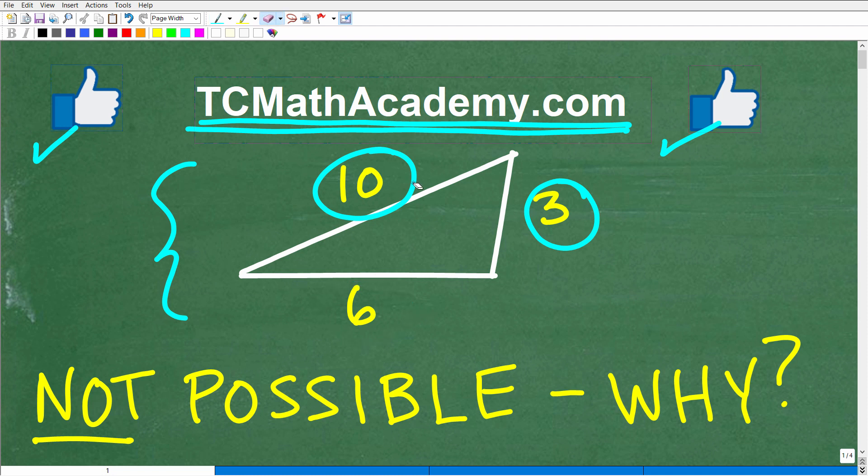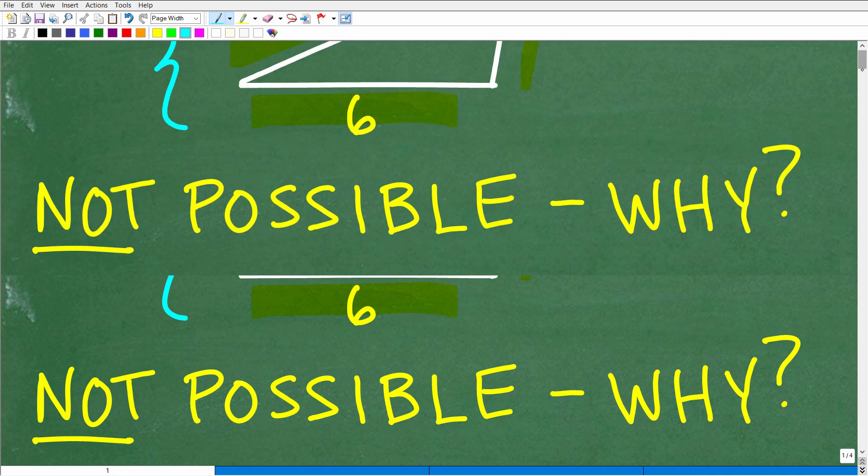So one more time, just so we understand what I'm trying to say here, understand the point, is that I'm saying that a triangle of lengths 6, 3, and 10 is not possible to construct. That's what I'm saying - a triangle, if you had a triangle and you had these lengths, well that's not a real triangle. You cannot construct a triangle with these particular lengths. And why is that? Well, let's go ahead and take a look at the answer right now.